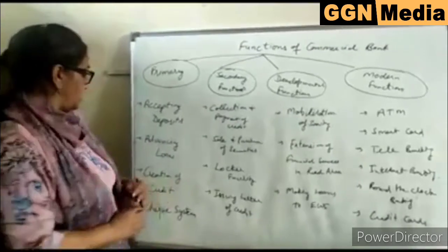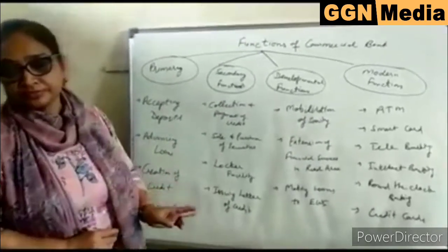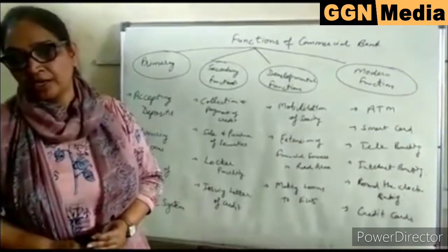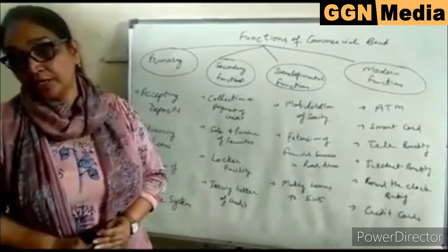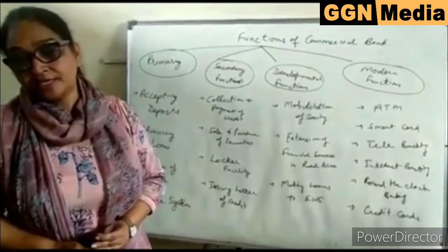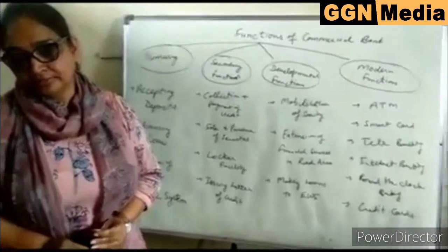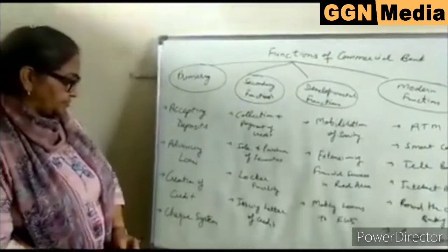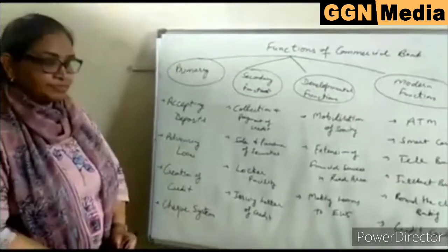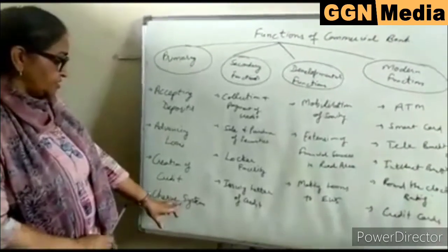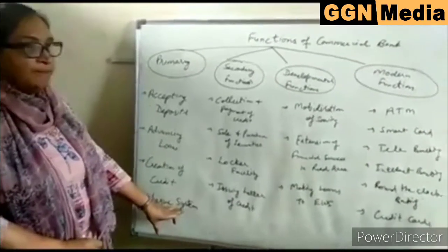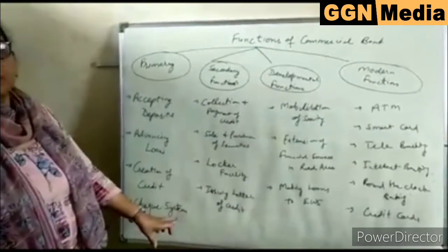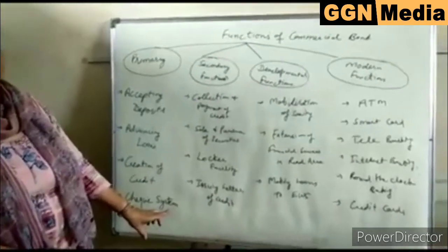Next is creation of credit. Commercial banks create demand deposits and circulate them as a medium of exchange. Through the cheque system of payment, the bank gives cheques to their customers through which they can withdraw the amount from the bank for payment on order.